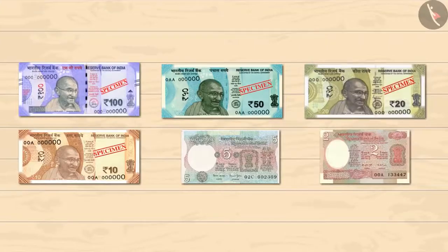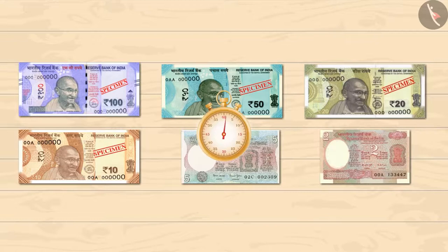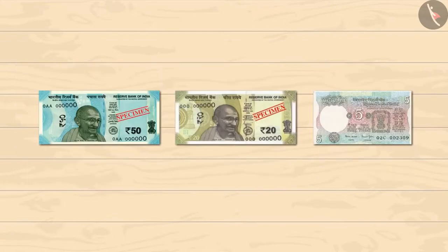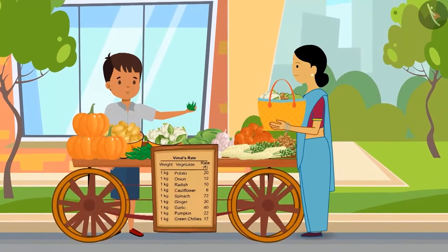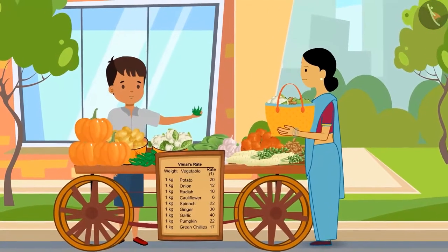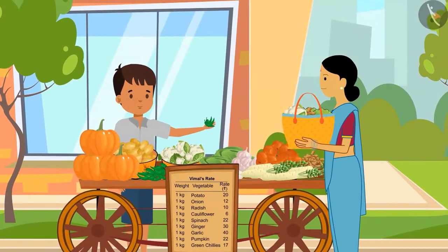A few notes have been placed in front of you. Let's help Sharma auntie add up to the total price. You can use each note only once — you can pause the video to choose the notes on your own. Well done! Also, Vimal is giving some green chillies to his aunt for free.